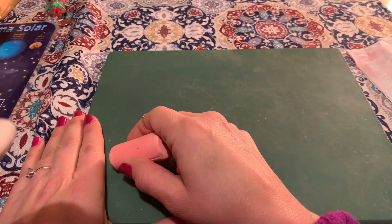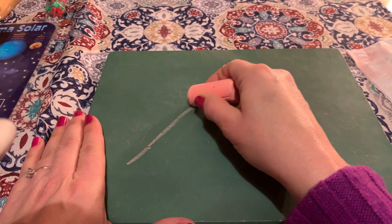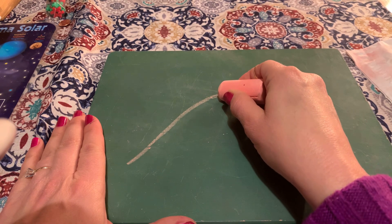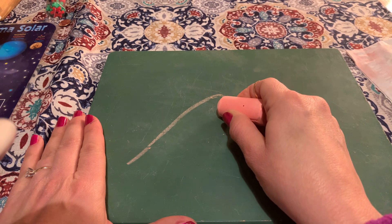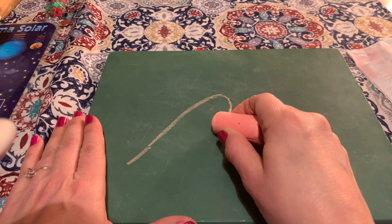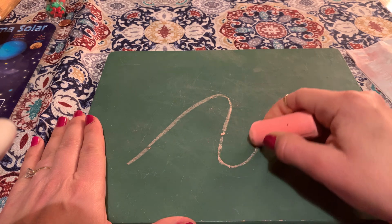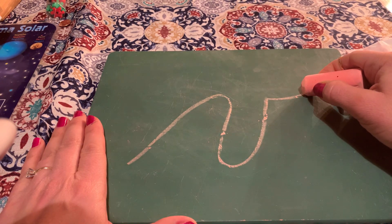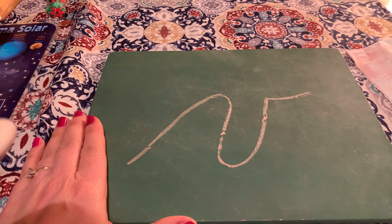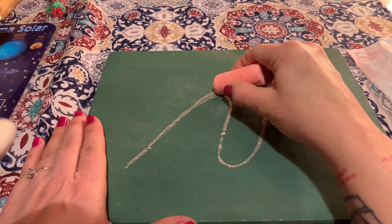All right, we're going to start. We're going to kind of make that bump like we do with the M and the N. But we're going to loop back up and then out. Okay, I'm going to trace that one over, come up.